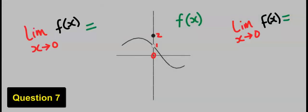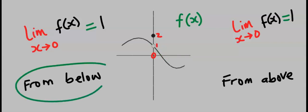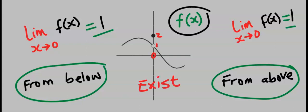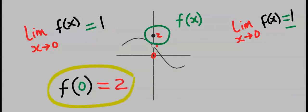Next, consider this question. The approach from the left is 1, and the approach from the right is also 1. Hence from below is 1 and from above is also 1. We conclude that the limit of f(x) exists. We can also note that f(0) is equal to 2.